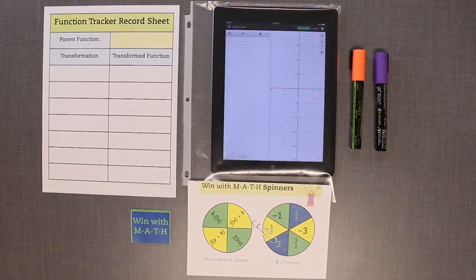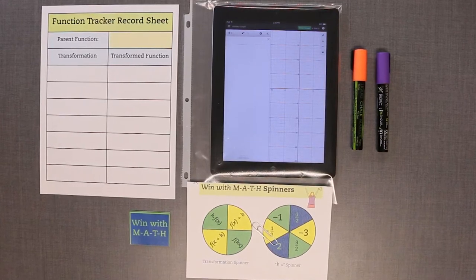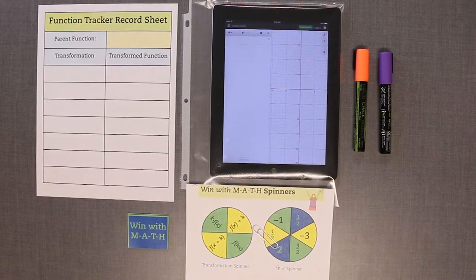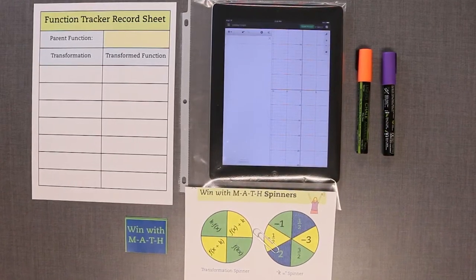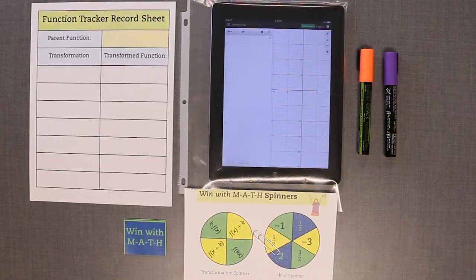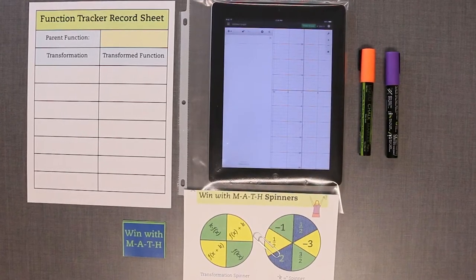Cut out, then shuffle the Win with Math cards. Place the cards face down next to the Win with Math spinners in the center of the playing surface. A paper clip will be used with each spinner. The function tracker record sheet will be used to record each new function transformation.